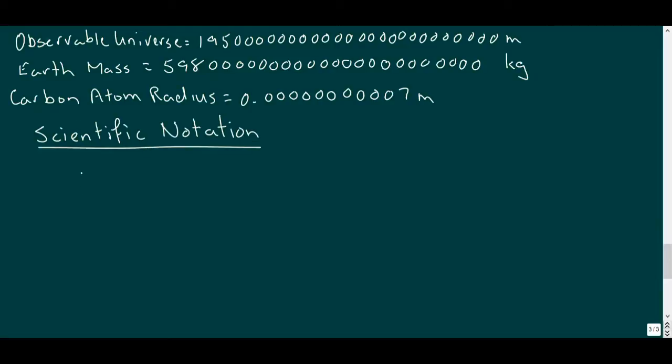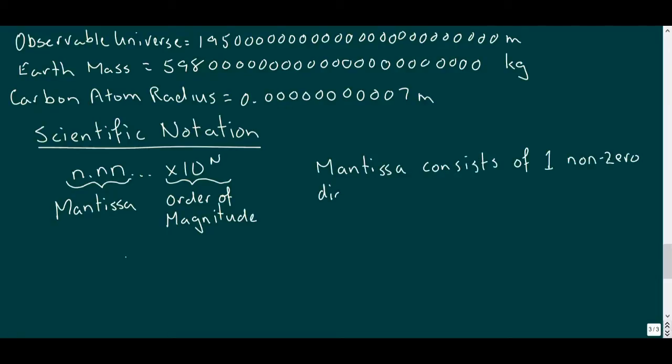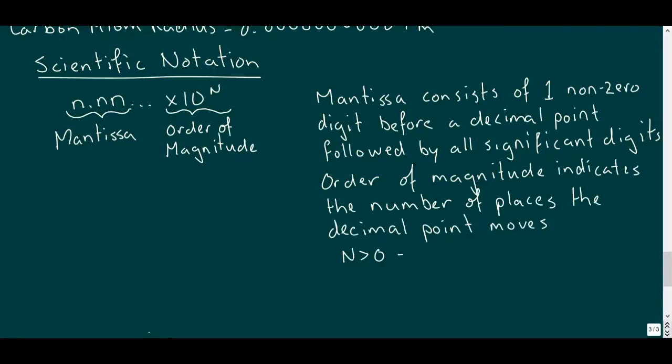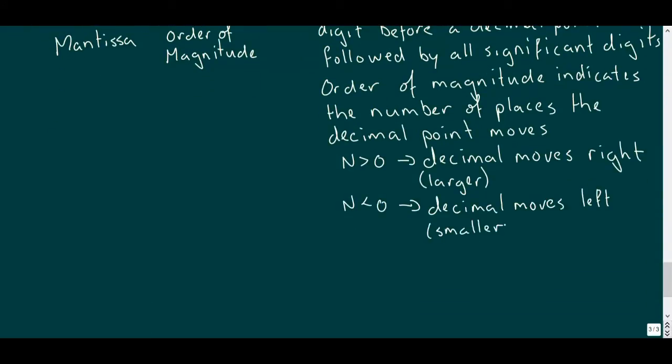We've developed scientific notation made up with a mantissa composed of the significant figures of the measurement and the order of magnitude, a power of 10, to take care of those placeholder zeros. To write the mantissa, record the first non-zero digit followed by a decimal point and all the other significant digits for the measurement, while the order of magnitude is a power of 10 where the exponent indicates the number of places the decimal moves. Positive exponents move the decimal to the right for larger numbers, while negative exponents move the decimal to the left for smaller numbers. If the exponent is equal to zero, this just means that the decimal doesn't move, so the mantissa is the number.